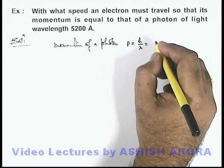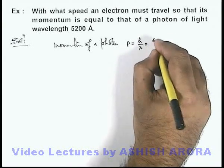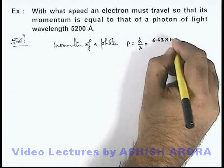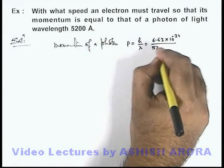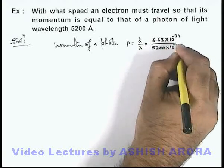So in this situation, we can substitute the value of h to be 6.63 into 10 to power minus 34, divided by the wavelength is 5200 into 10 to power minus 10.